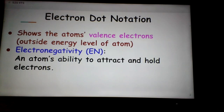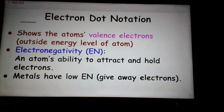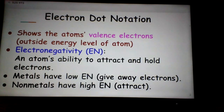Metals tend to give away valence electrons, while non-metals tend to attract extra electrons. That means metals will have a low electronegativity — they give those electrons away. It is the non-metals that have high electronegativity, the ability to attract and hold electrons. So non-metals are going to add on to their valence electrons until they can get up to the magic number 8, with a few exceptions.